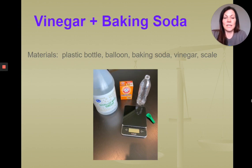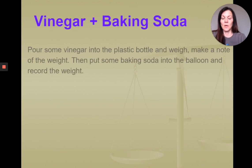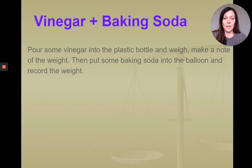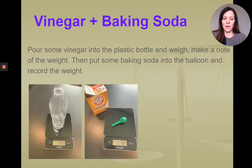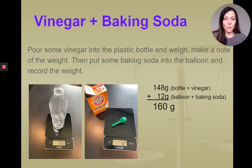For our next experiment, we used vinegar and baking soda. I took an empty plastic water bottle, some vinegar, some baking soda, a balloon, and we used our kitchen scale. We put some vinegar into the plastic bottle and weighed that, then put some baking soda inside the balloon and recorded that weight as well. On our kitchen scale, we had 148 grams of vinegar along with the bottle, and our balloon plus baking soda weighed 12 grams. This made a total weight for our reactants of 160 grams.